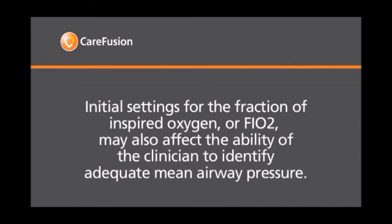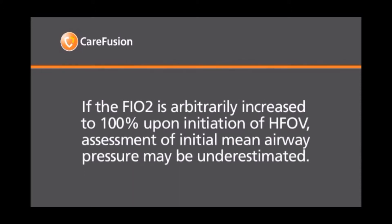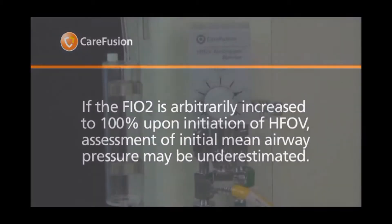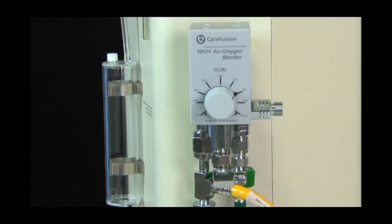Initial settings for the fraction of inspired oxygen, or FIO2, may also affect the ability of the clinician to identify adequate mean airway pressure. If the FIO2 is arbitrarily increased to 100% upon initiation of HFOV, assessment of initial mean airway pressure may be underestimated. By increasing the FIO2 incrementally by 10 to 15% during the transition to HFOV, the relative effects of mean airway pressure manipulations are more readily recognized.